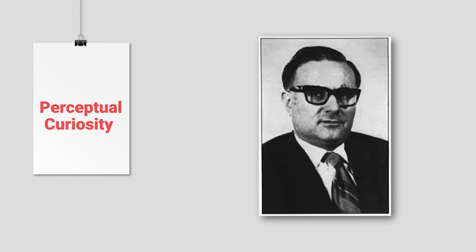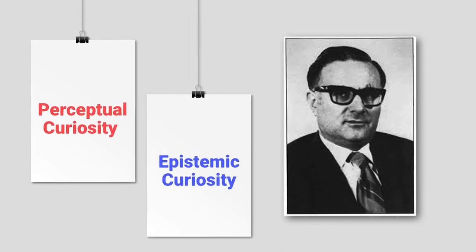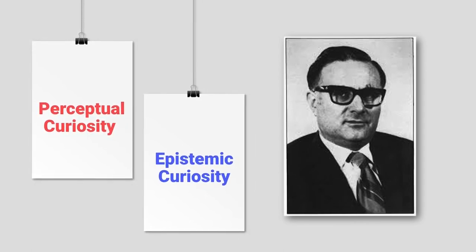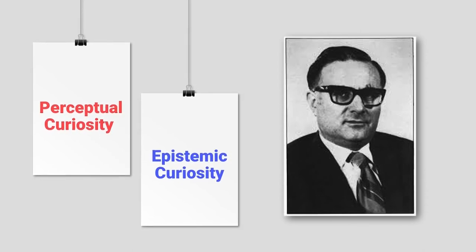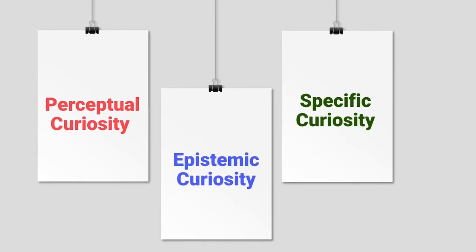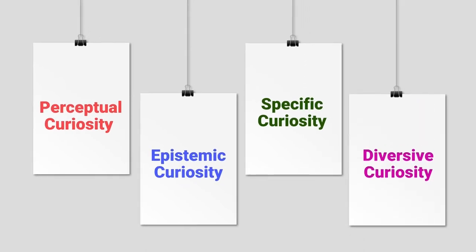In epistemic curiosity, we do not only gather information as in perceptual curiosity, but we try to understand it — so it is one step ahead from perceptual curiosity. Next is specific curiosity, where our desire is to explore a specific event or activity. Whereas in diversive curiosity, we deal with the general desire — specific curiosity deals with the specific task and diversive curiosity deals with the general task.